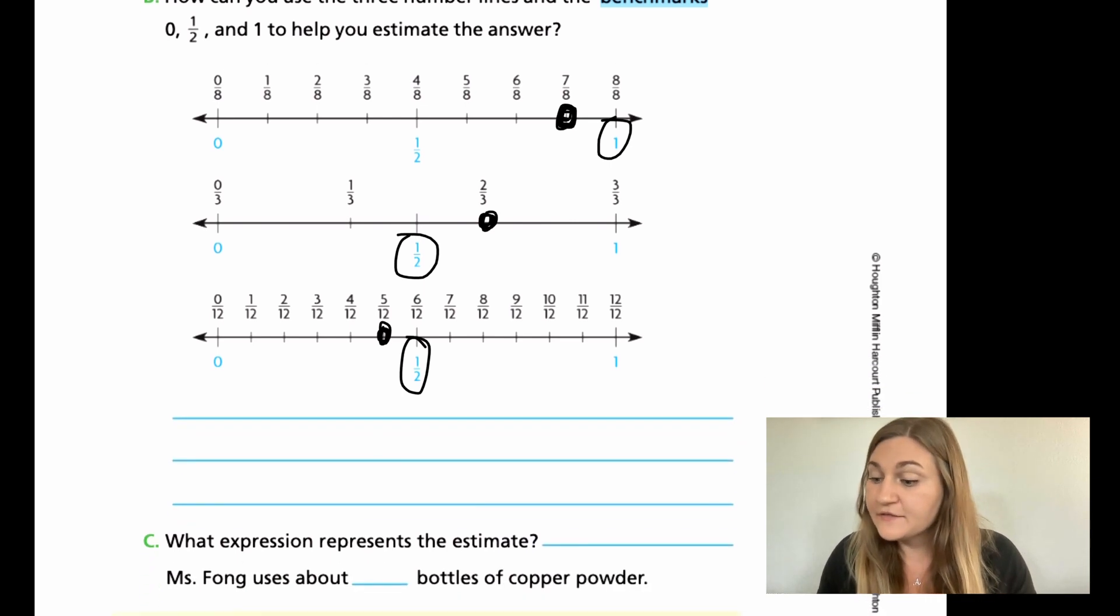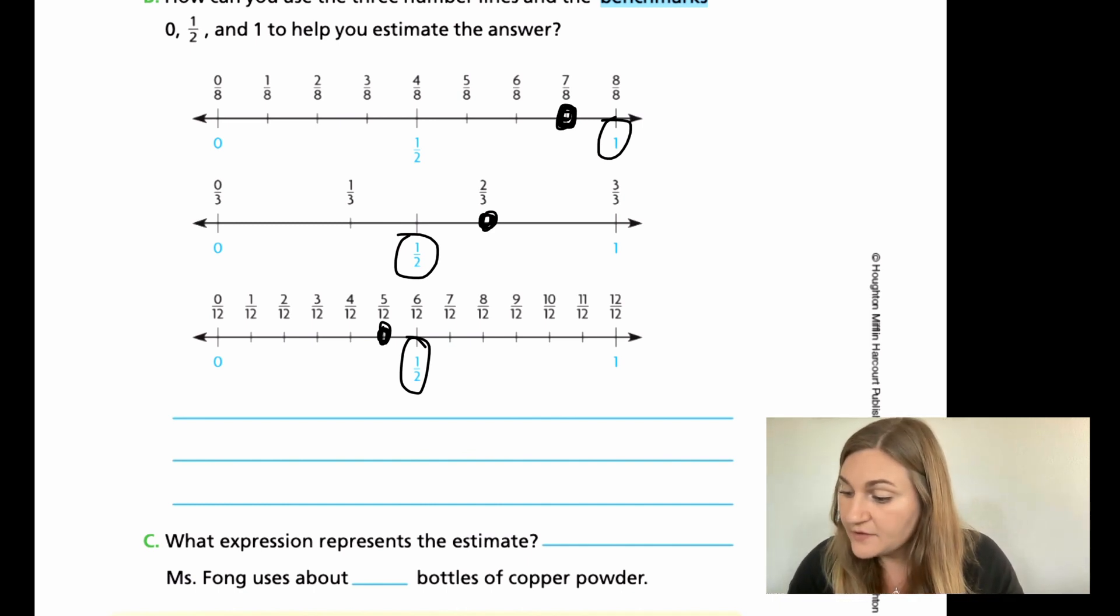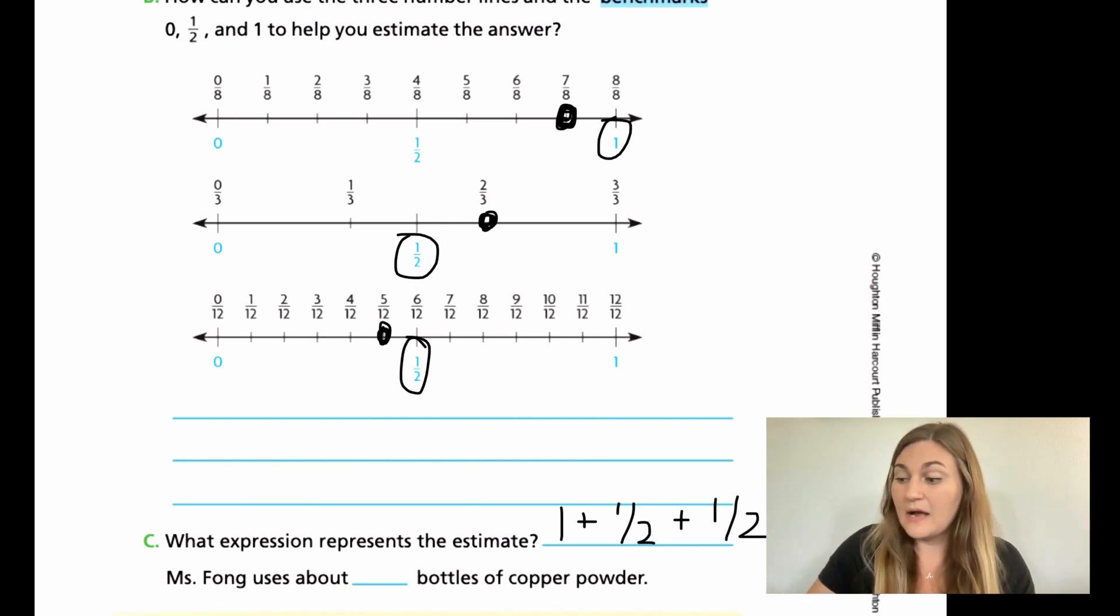And then for C, what expression represents the estimate? So now we want the expression like in A, but using the new estimates that we just did. So the estimate I had for the first one was 1, the second one was 1/2, and the third one was also 1/2. So Mrs. Fong used about how many bottles of copper? Well, I know that 1 plus a half and a half is going to be 2 when I put them together. So my estimate is that Mrs. Fong used about 2 bottles of copper powder.